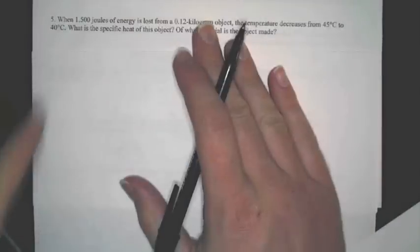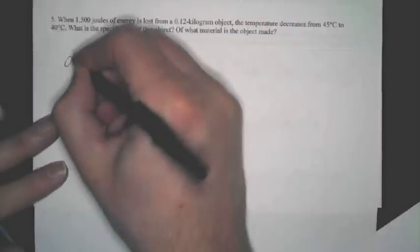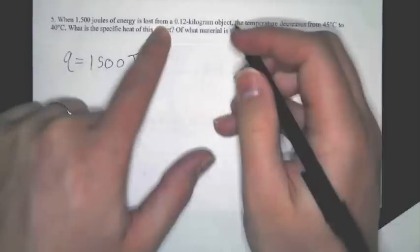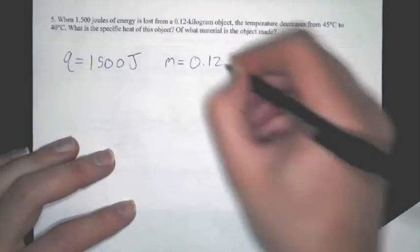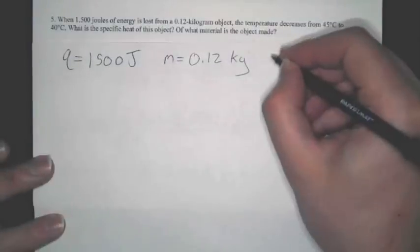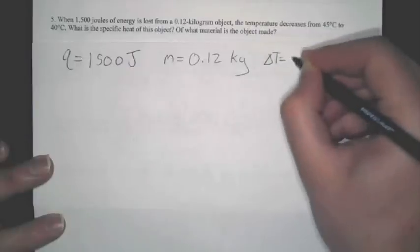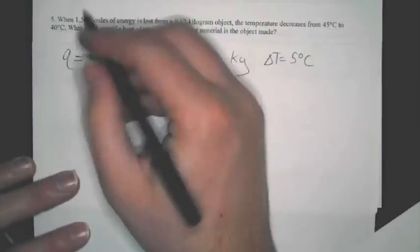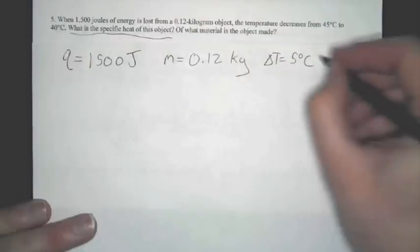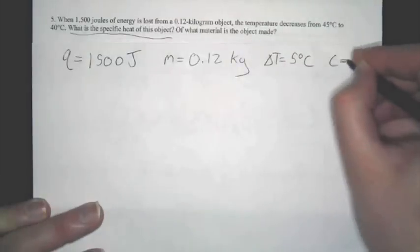So for number five, you want to look here. This one is just a little different because you're not solving for Q. You're solving for a specific heat, so it's a little different. So you go through and you see that Q in this case, they actually tell you is 1,500 joules. It says that your mass is equal to 0.12 kilograms. It says the temperature decreases from 45 to 40 degrees. So your delta T is equal to 5 degrees Celsius. And then it says what is the specific heat of this object? So it doesn't even tell you what it is to look it up. So you just have to say, you know, what is our specific heat?